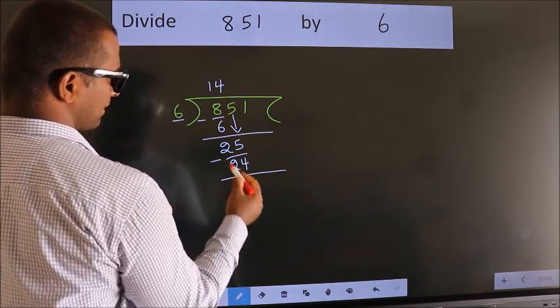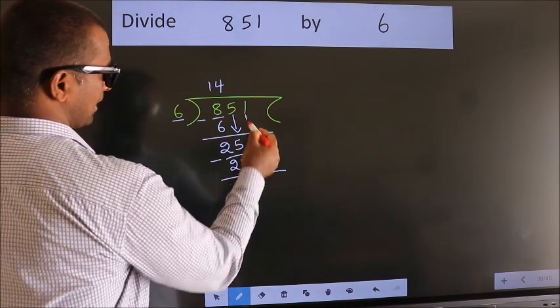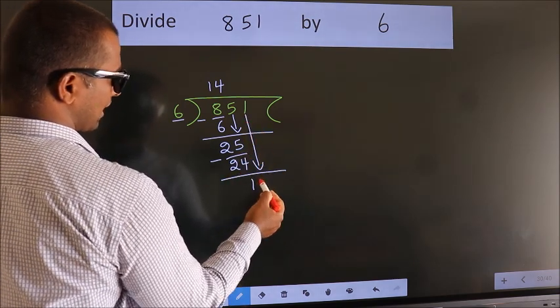Now we subtract. We get 1. After this, bring down the beside number. So, 1 down.